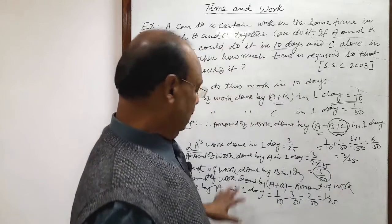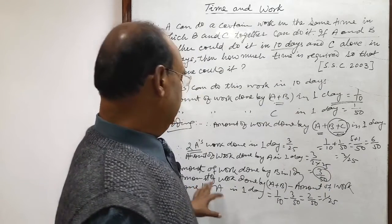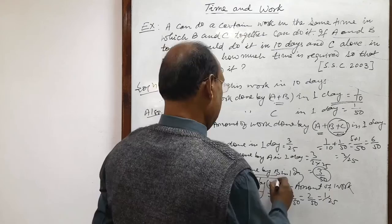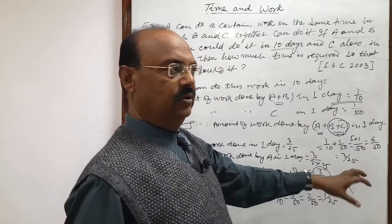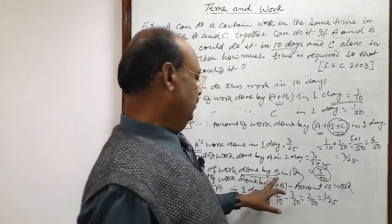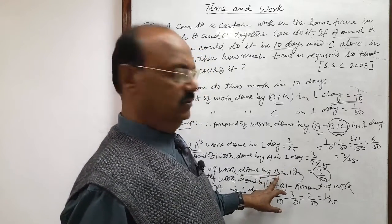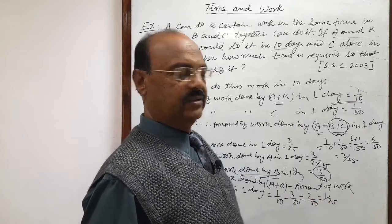So this is the amount of work done by B, amount of work done by B in 1 day: 1 by 25. So number of days required by B to complete this work, reciprocal of this much means 25 days, that will be answer.